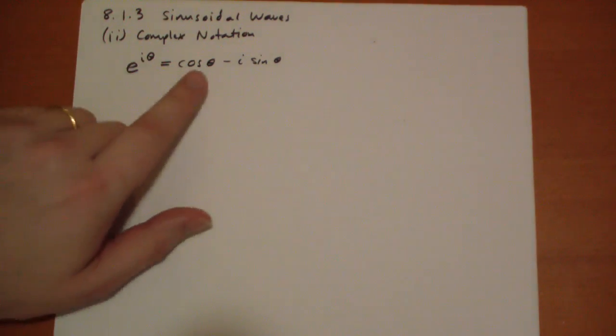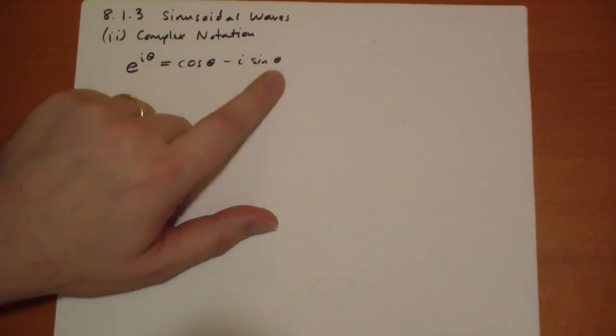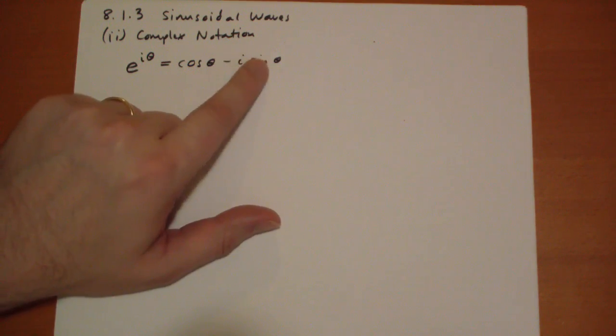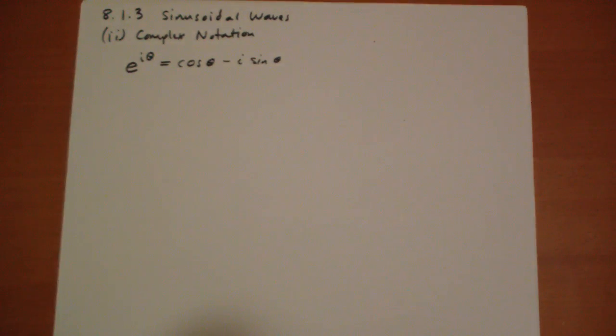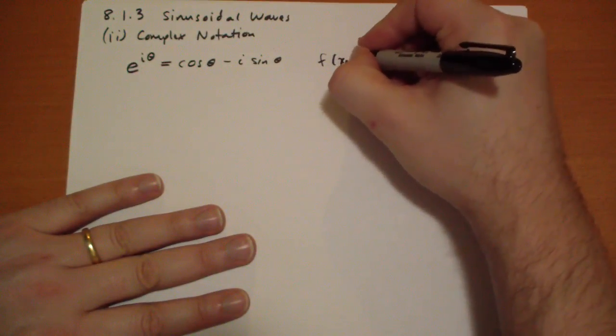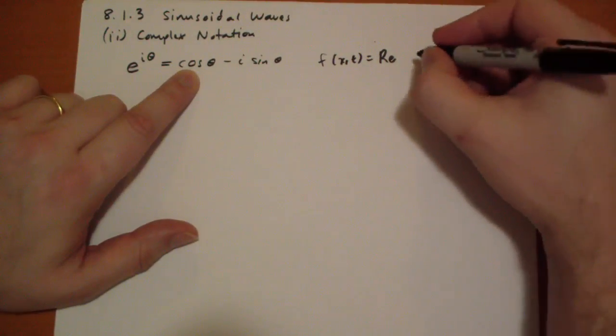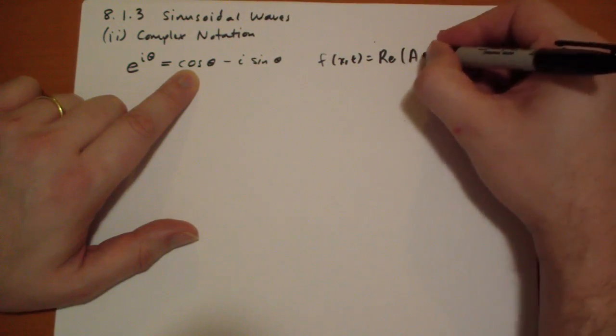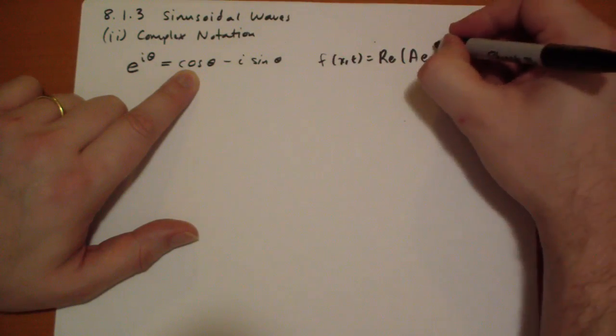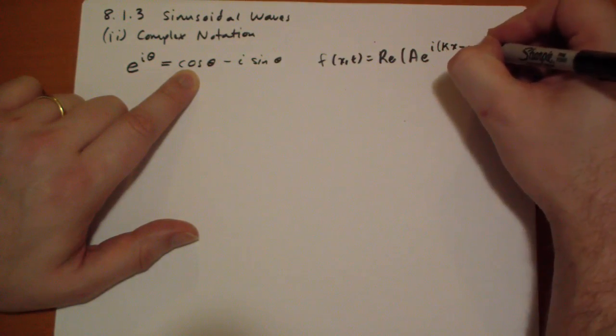So this is a complex number. You have a real and a complex part. The complex part is not imaginary. I'm sorry, the imaginary part is not an imaginary number. The imaginary part is sine theta. So you could rewrite your function f as the real, once you see cosine theta. So we just take of Ae to the i times kappa x minus omega t.